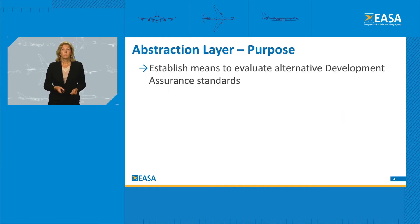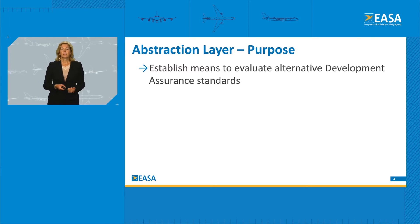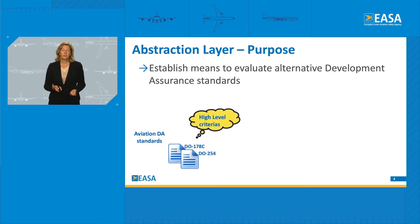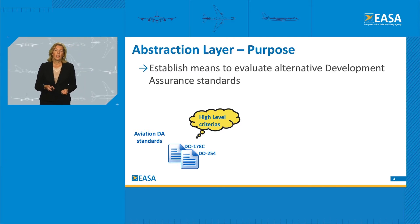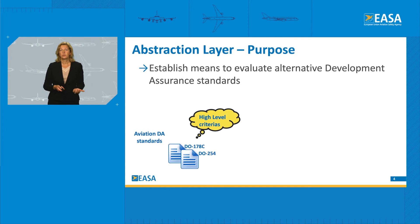It is exactly the purpose of the abstraction layer. The abstraction layer, tasked by our senior management, is the means established to evaluate alternate development assurance standards. We start from the aviation standards — DA stands for development assurance — from which we try to capture the key essential aspects, and we ask ourselves what we want to achieve with these key essential aspects. This defines our high-level criteria.